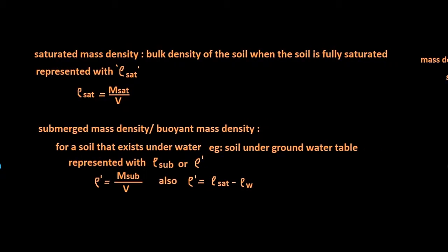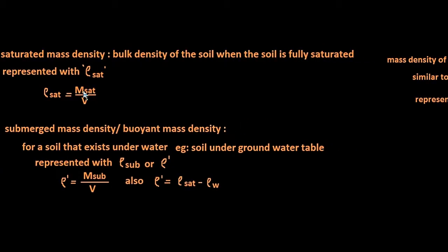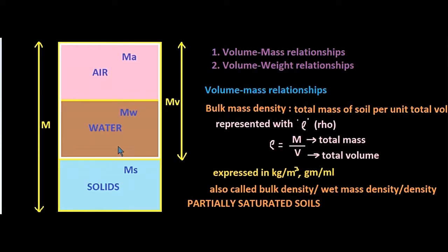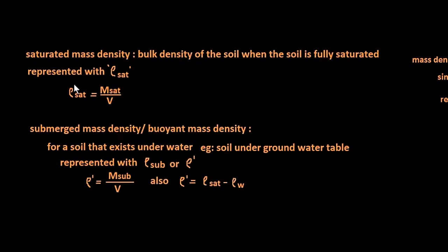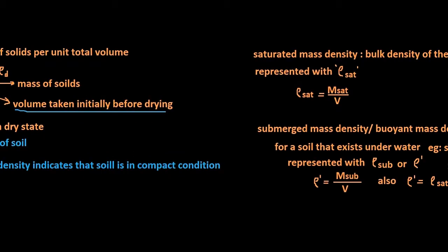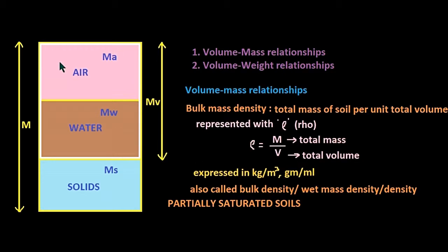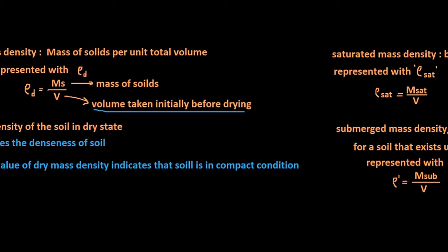Moving on to saturated mass density — it is the bulk density of soil when the soil is fully saturated, that is when the voids are completely filled with water and air is not present. It basically becomes a two-phase diagram, which we discussed in previous videos. It is represented with ρ_saturated, and ρ_saturated equals mass of saturated soil divided by total volume.